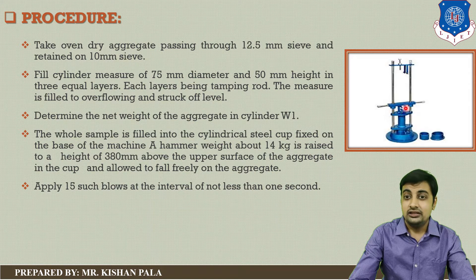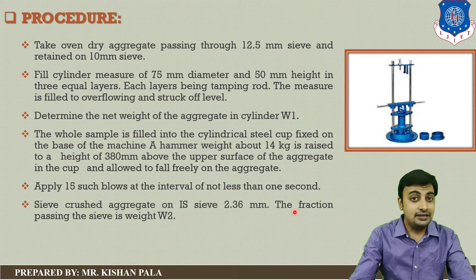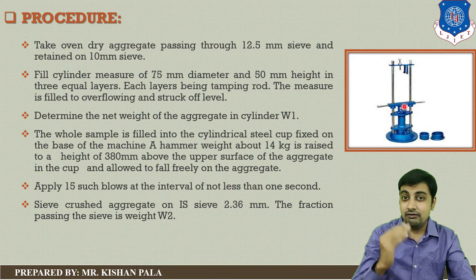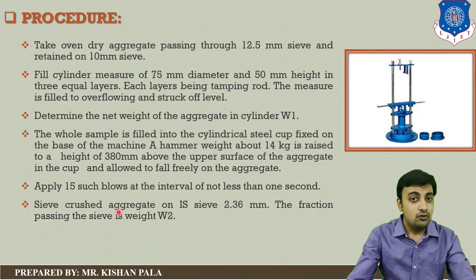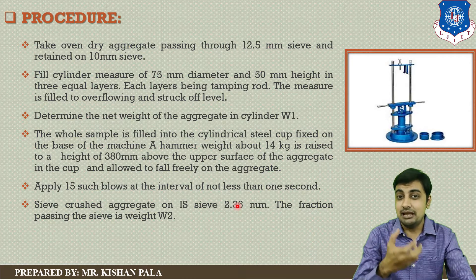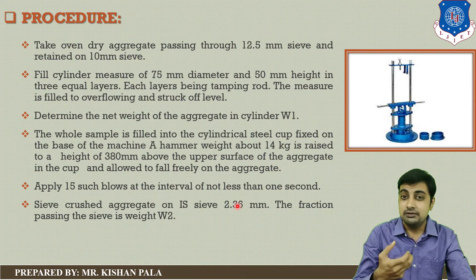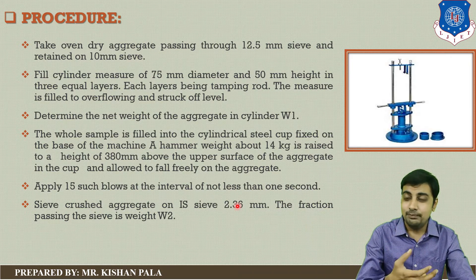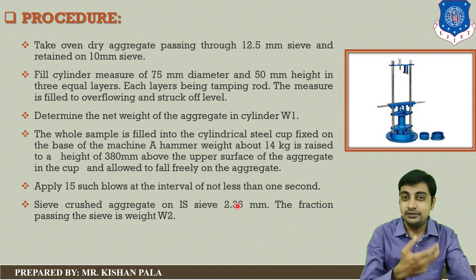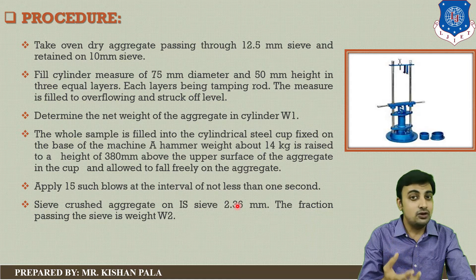Remember one thing: the interval between two blows should not be more than one second. After applying 15 blows with a falling height of 38 cm and an interval of less than one second, we get the crushed aggregate. Then we sieve this aggregate on the 2.36 mm IS sieve and find out the sample which has passed through the 2.36 mm IS sieve — this is the fraction passing the sieve, which is W2. With the help of W1, which is our sample, and W2, which is the crushed aggregate, we can easily find the impact value of the aggregates.